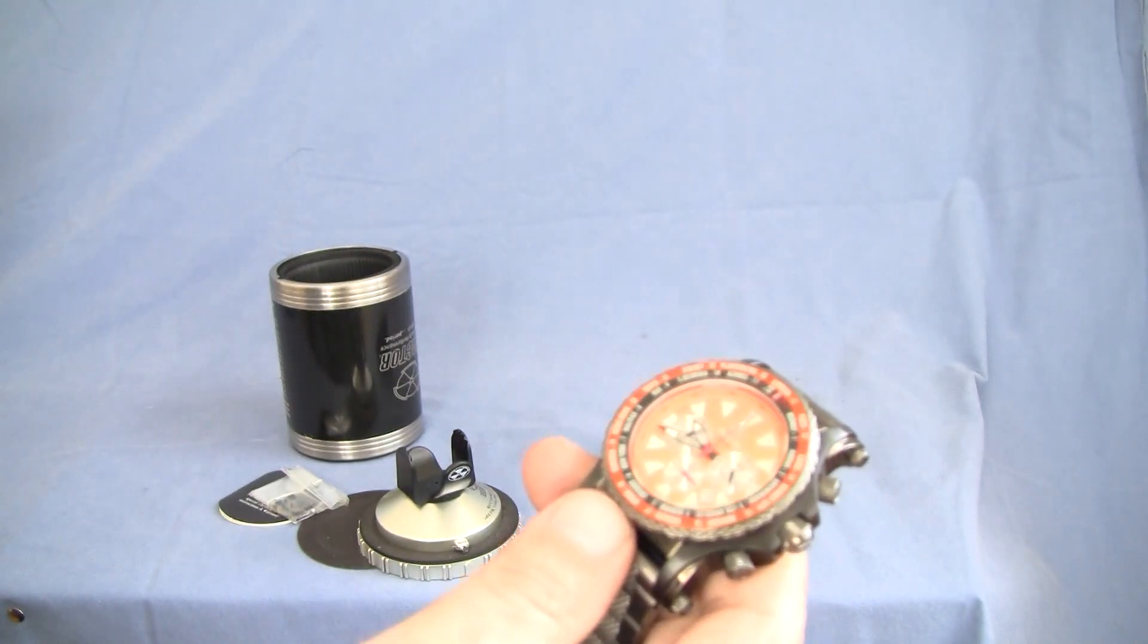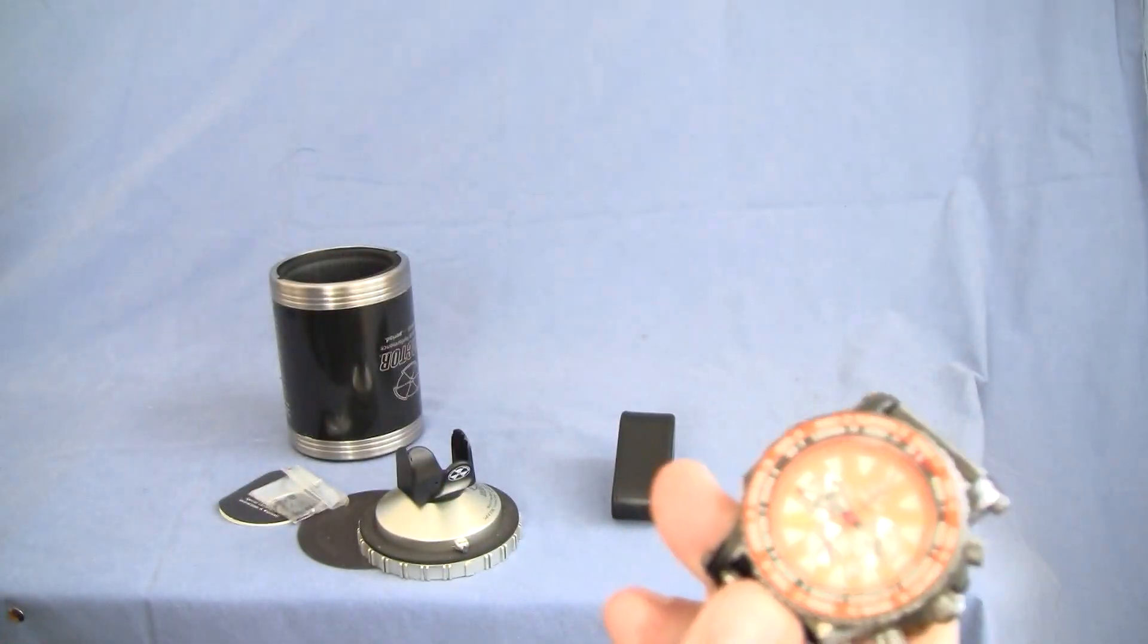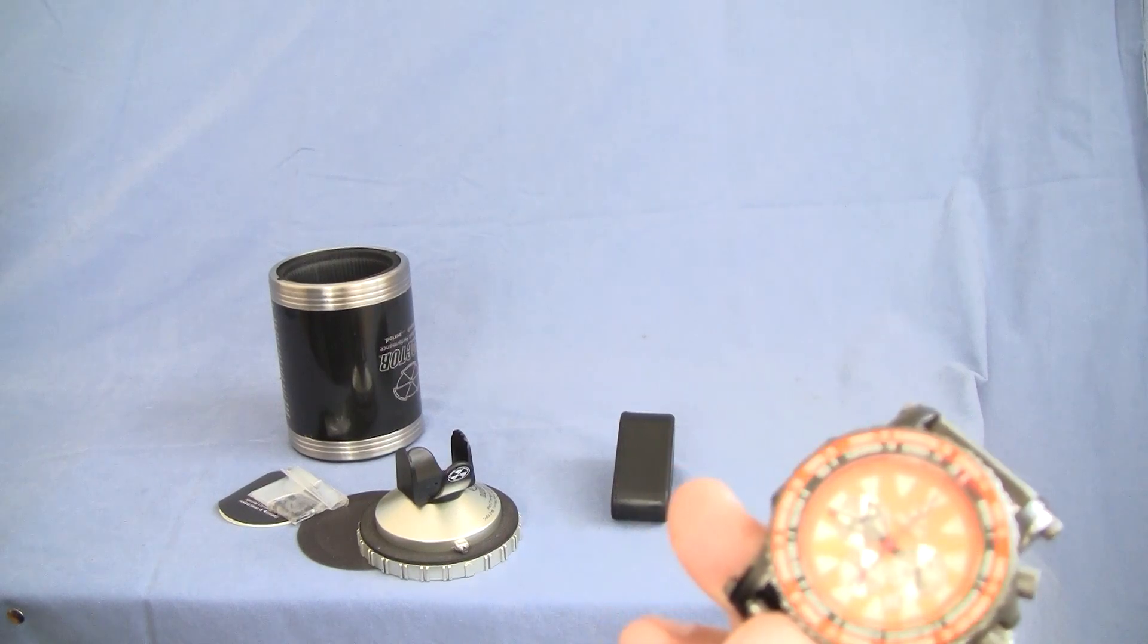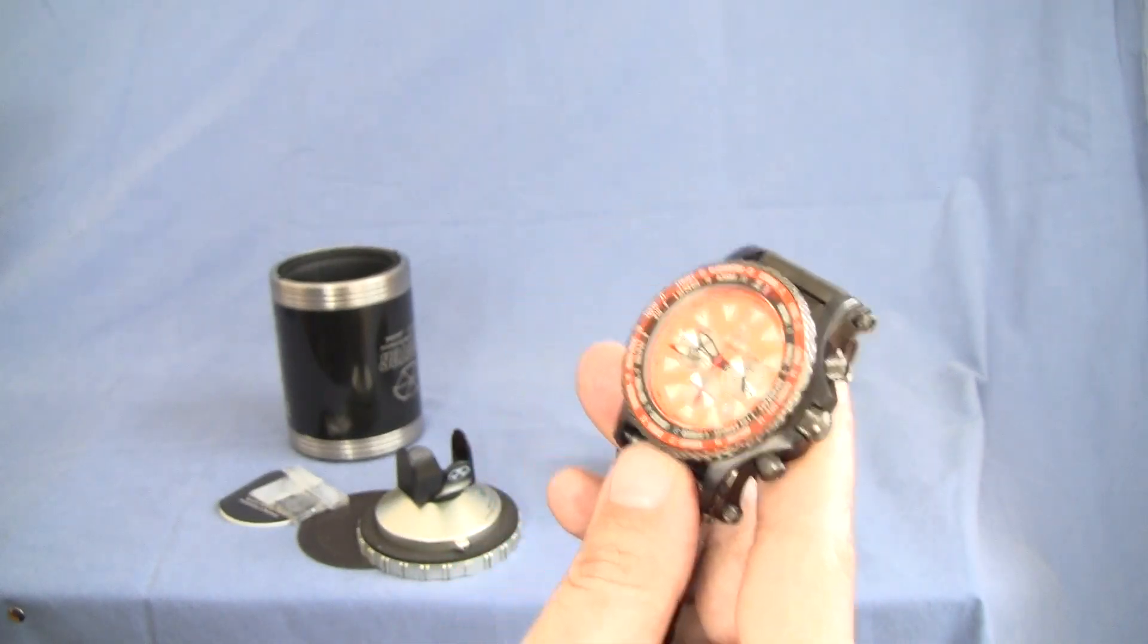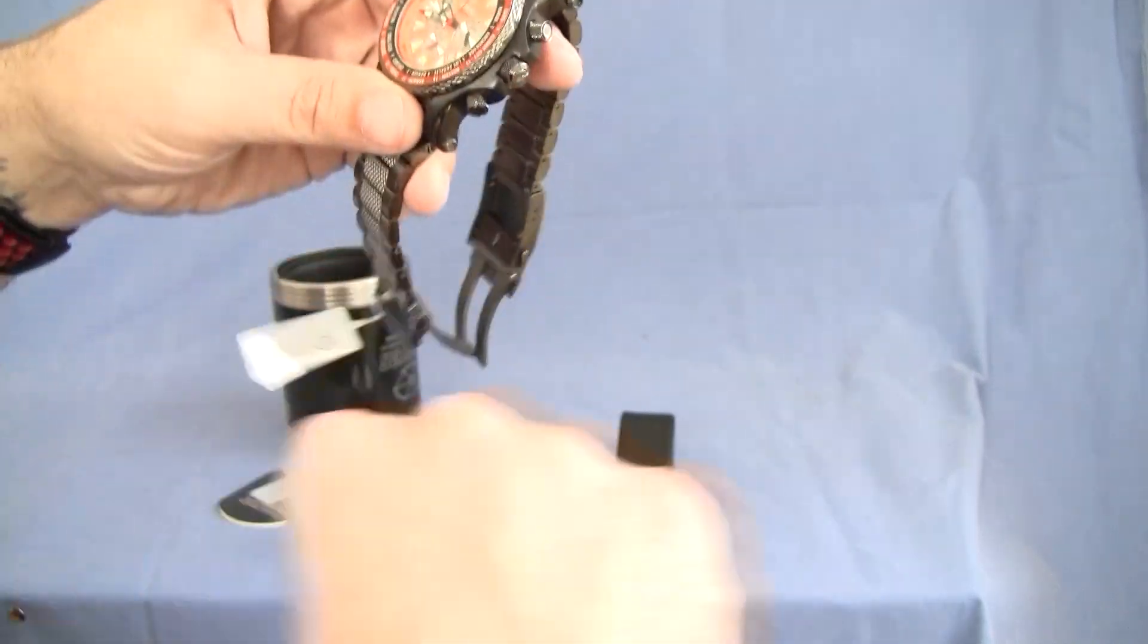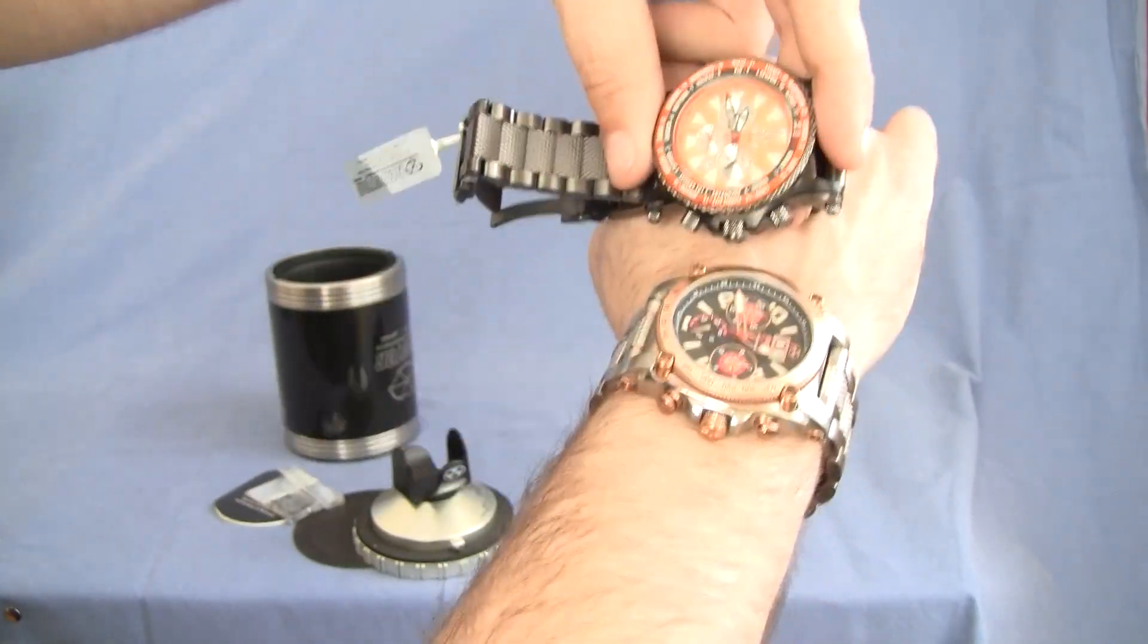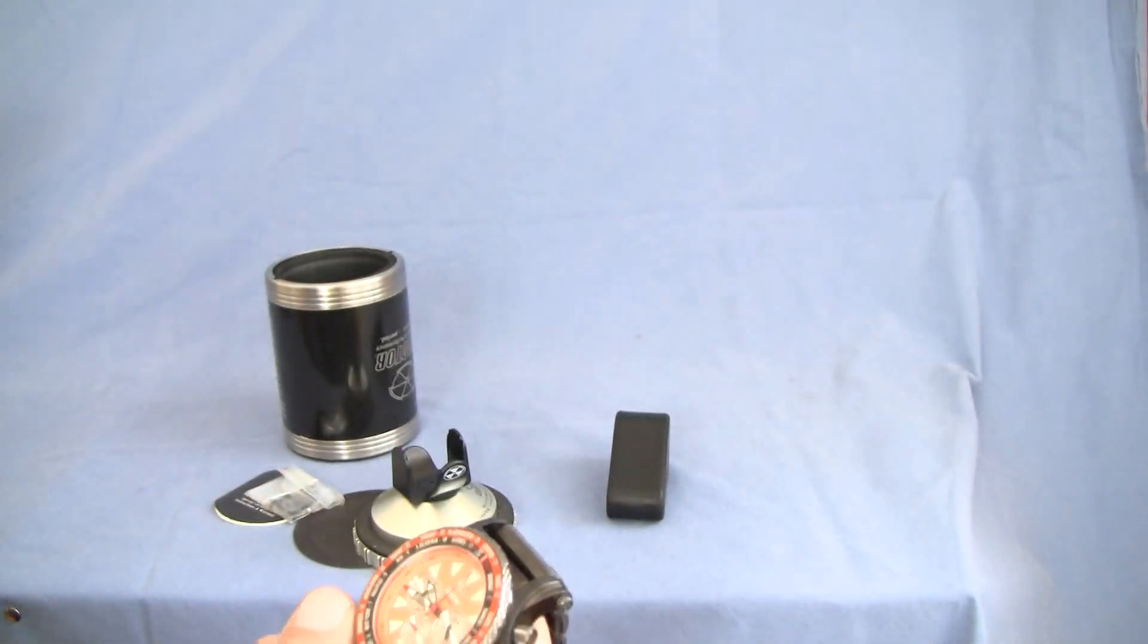Screw down crown on this guy. So that'll give us basically 20 meters water resistance, or I believe that's like 660 feet, something like that. I could be wrong. The case size on this guy is 45 millimeter, which is a perfect size in my opinion for my hand. You can kind of see the difference.